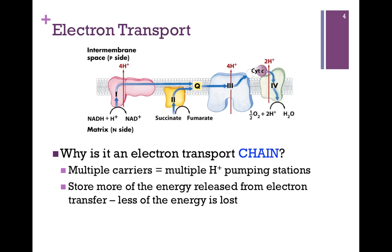In other words, we've converted the energy of the electron into a concentration gradient, a proton gradient. And we'll see more later of how we can utilize that and convert that into a form of chemical energy. But the more of these proton pumping stations we have, the more of the energy we can store. We lose less of that energy.